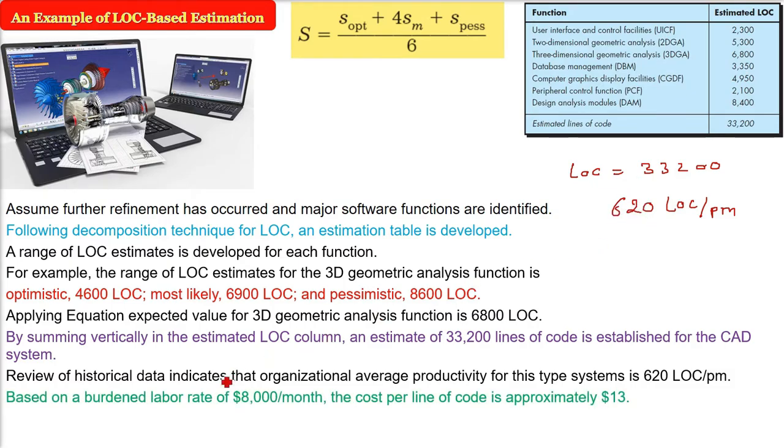Let us say that the labor cost or the burdened labor rate is $8,000 per month. This is the cost. So what will be the cost per line of code? You have the given values: 33,200 lines of code you estimated. You know by past 620 LOC per month. $8,000 is the dollar. So what you have to do is divide this amount $8,000 with this 620. What will be the cost of one line? $12.90 or $13 is the cost per line of code.